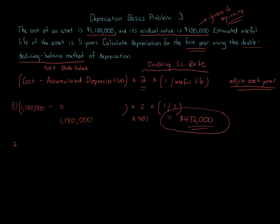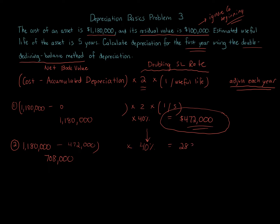Now I'll show how we do the second year. In year two, we take the cost $1,180,000 and subtract away the total accumulated depreciation taken so far. In year one we took $472,000, so subtracting that gives us a net book value of $708,000. We then multiply $708,000 by the same 40%, which gives us $283,200.